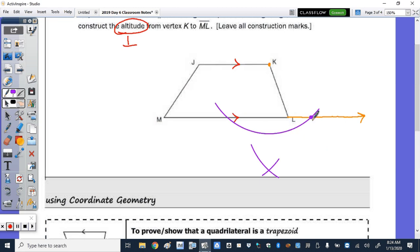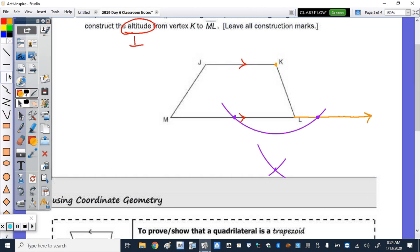We draw an arc from that point of intersection and then from this point. Once again, we drew the arc from here and here to get this point here. Now take your straight edge. I will use the line tool this time and draw a line from K through your point of intersection.